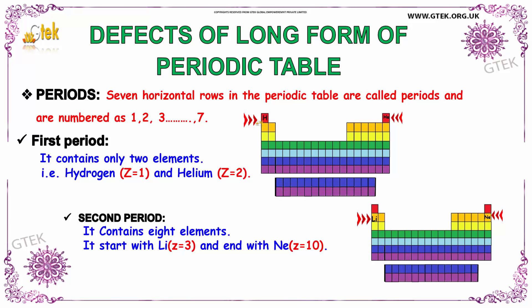In the second period, the atomic number ranges from Z equal to 3 to 10 — that is, lithium to neon.